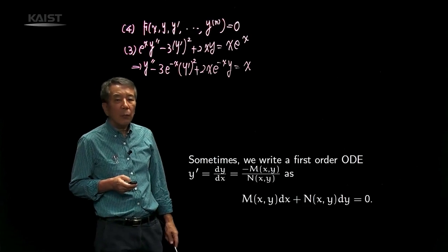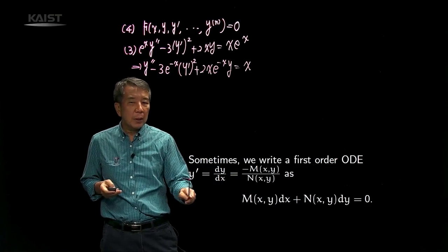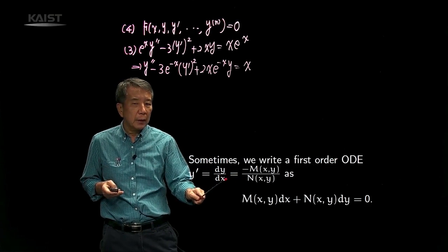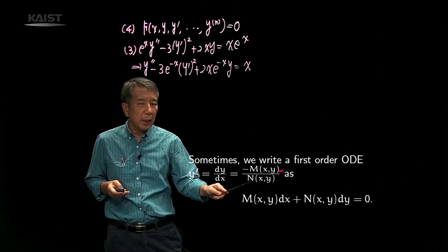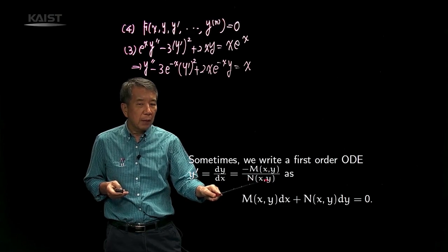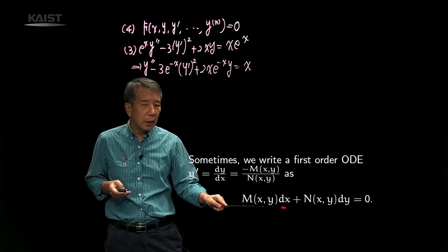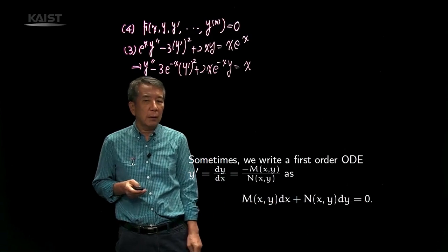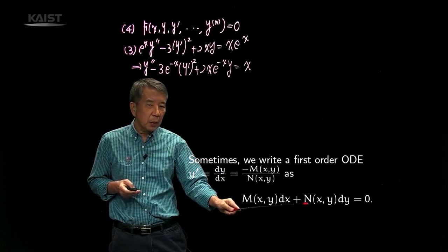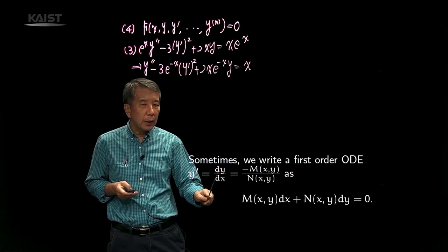Sometimes we write a first order ordinary differential equation — say y prime equals dy over dx equals negative capital M of x, y over capital N of x, y — as M times dx plus N times dy equals 0. This is another common expression of a first order differential equation.